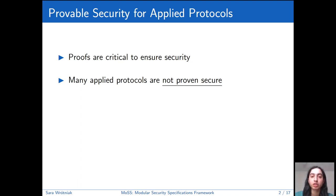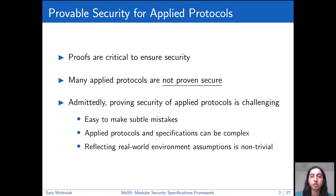There have been many failures of systems which were not proven secure. So ideally we would like provably secure protocols as well. But unfortunately, many applied protocols are not proven secure. Admittedly, proving the security of applied protocols is not easy. We can make subtle mistakes, and the protocols themselves and the specifications, which include assumptions and goals, can be quite complex. In addition, defining specifications which accurately reflect real-world environment assumptions, for example about communication and synchronization, is not trivial. So altogether, this can discourage people from trying to prove the security of protocols.